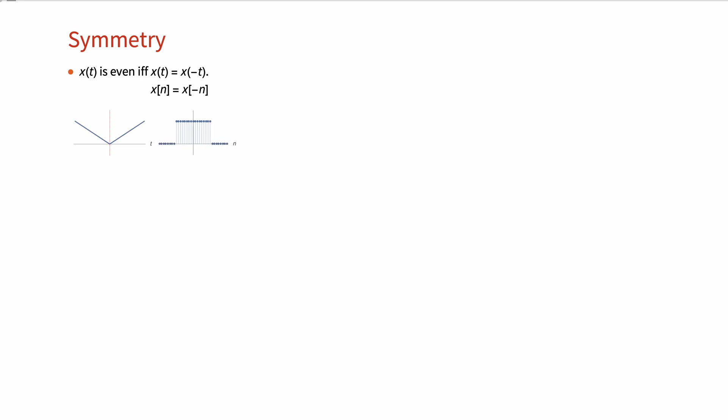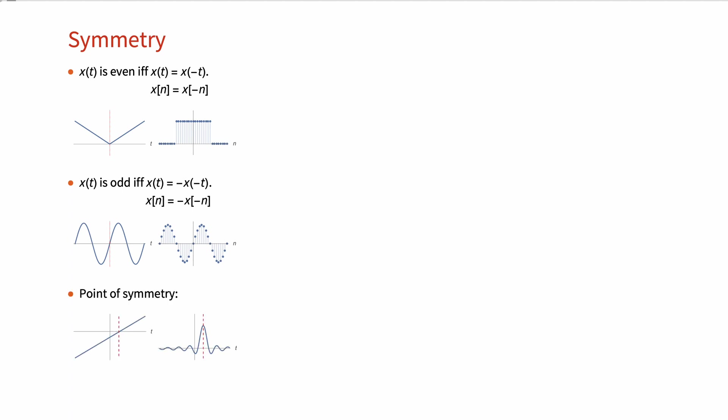Some examples of signals and sequences with even symmetry are shown here. x(t) has odd symmetry, or it is odd, if and only if x(t) is equal to minus x(−t) for all values of t. Similarly for discrete time sequences, as shown here with these two examples.